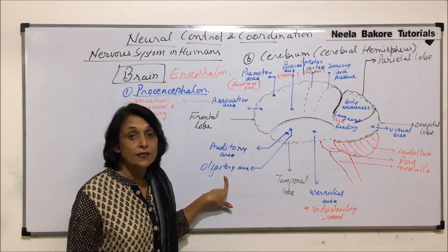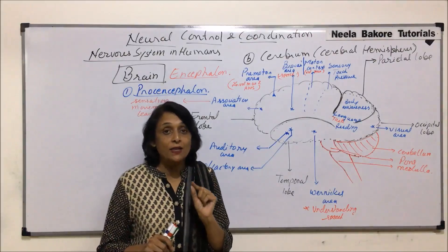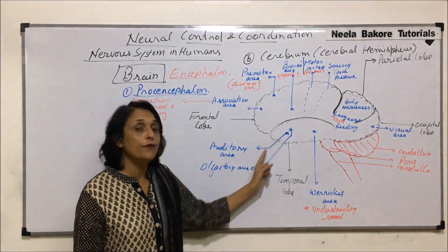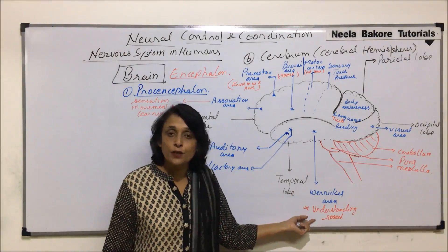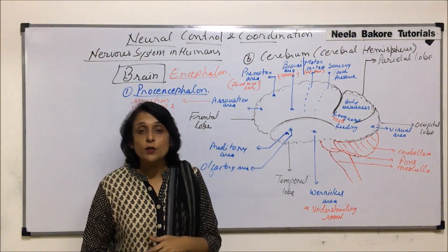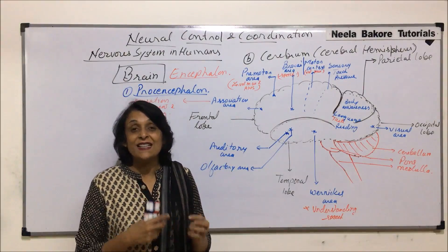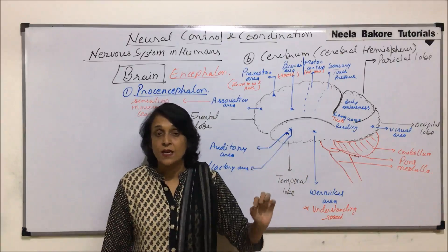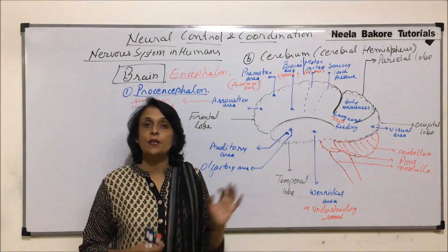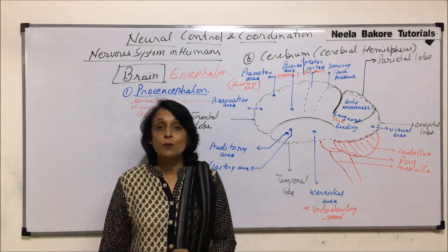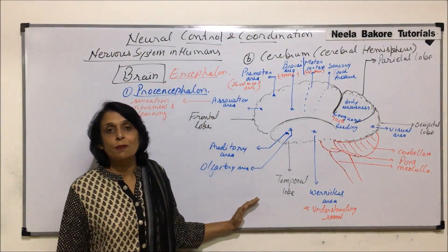The temporal lobe also has auditory and olfactory areas. The olfactory tract attaches to the olfactory area of the temporal lobe and is responsible for the sense of smell, while the auditory area is for hearing. To sum up, the cerebrum is responsible for sensory functions, motor functions, various types of awareness, and learning skills. It is also considered the analytical part of the brain — things we understand, analyze, and interpret. Scientists believe information is stored here as memory, making it the most important part of the brain.